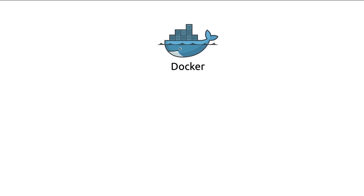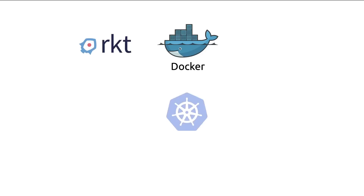Let's go back in time to the beginning of the container era. In the beginning, there was just Docker and other tools like Rocket. But Docker's user experience made working with containers super simple, and hence Docker became the most dominant container tool. And then came Kubernetes to orchestrate Docker — Kubernetes was built to orchestrate Docker specifically in the beginning, so Docker and Kubernetes were tightly coupled.